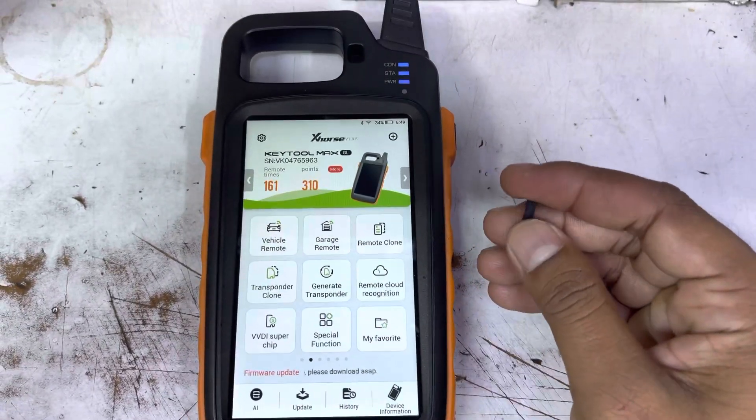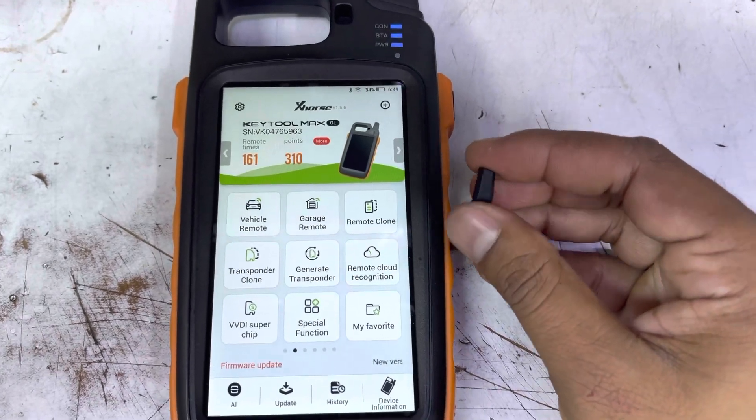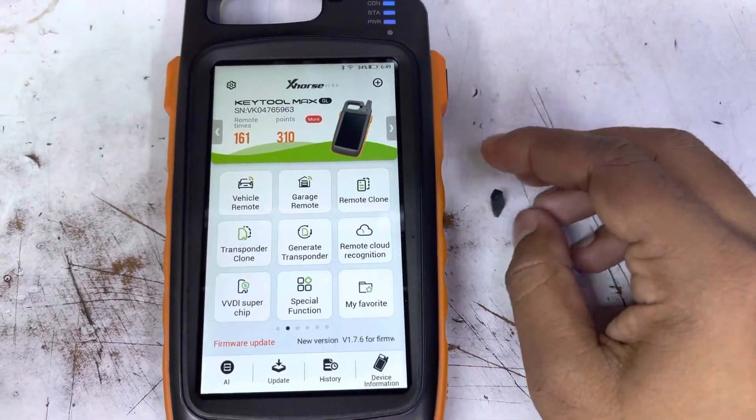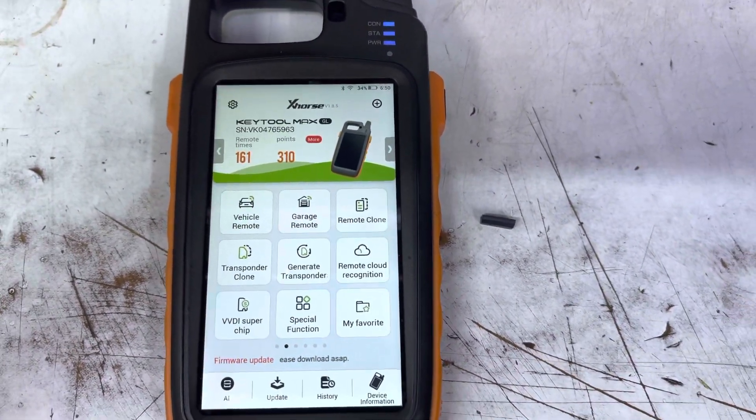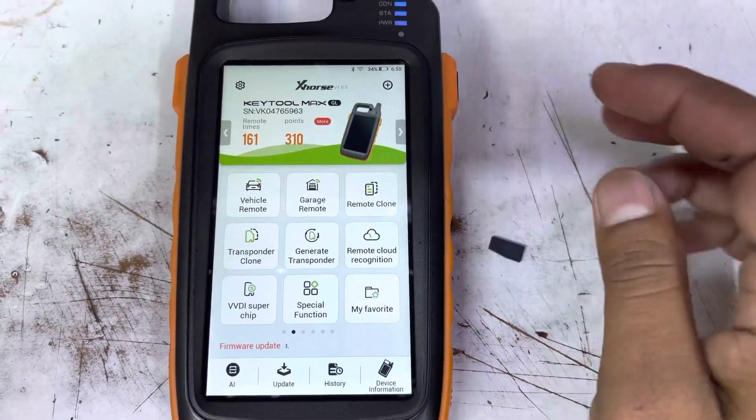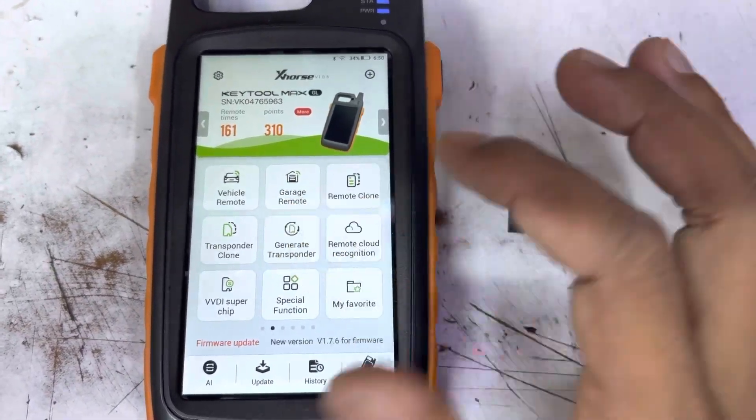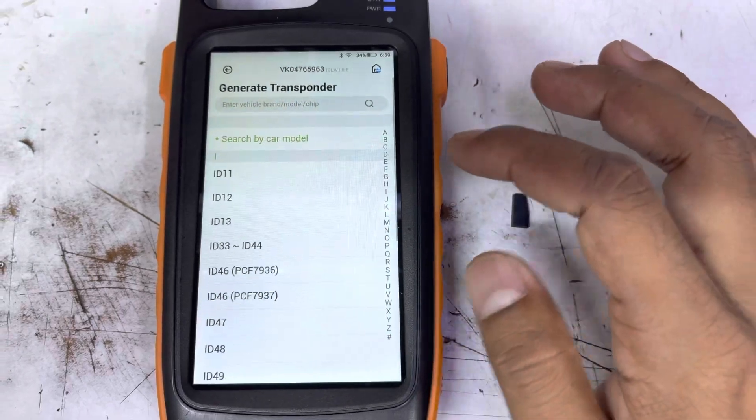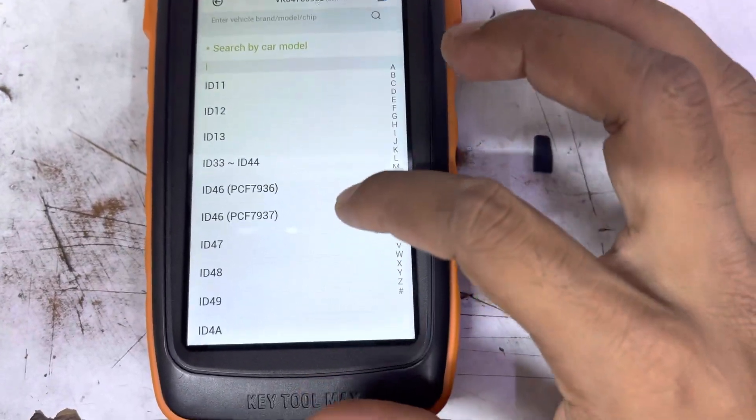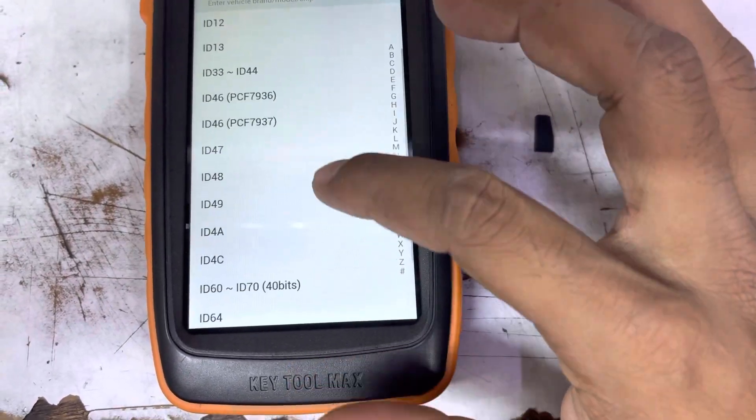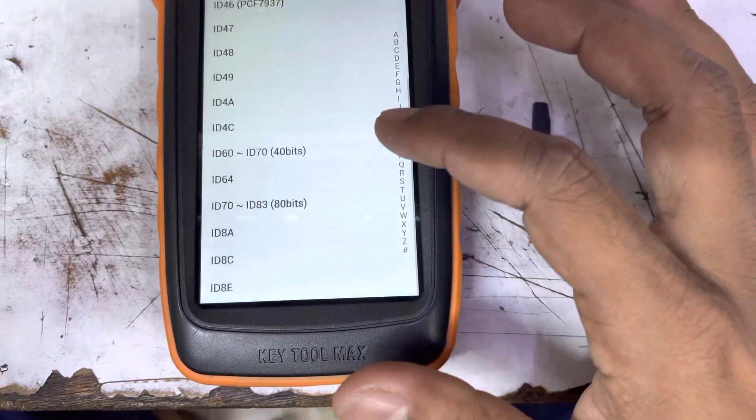Today I'm going to show you how to generate transponder chips like 4D, 46, 4C, G, H, or anything. This is the VVDI super chip. Go to generate transponder and you can see here ID 11, 12, 13, 44, 46, 47, 48, 49, 4C. You can set it as any of them.